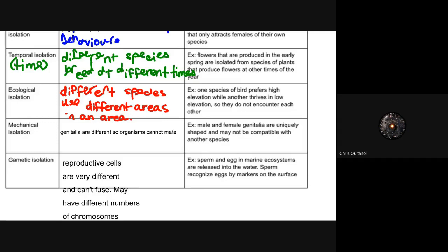The last two are mechanical isolation and gametic isolation. Mechanical isolation means different organisms have different reproductive systems. The genitalia are not compatible with each other, so male and female genitalia are uniquely shaped and may not be compatible with other species.